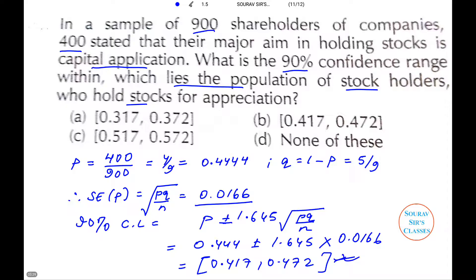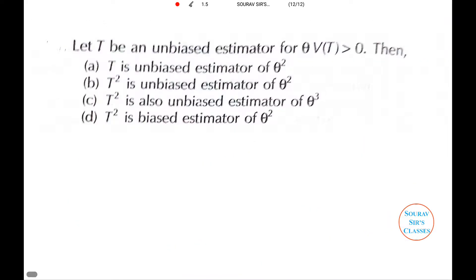The next question says: Let T be an unbiased estimator of theta, with variance of T greater than 0. We need to comment on which of the following is true.